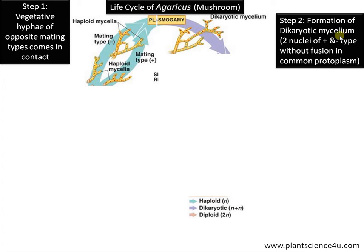'Di' means two, 'karyo' means nucleus — that is, the presence of two nuclei in a common protoplasm without fusion. You can see here red-colored and green-colored nuclei without fusion, and this is called dicharyotic mycelium.